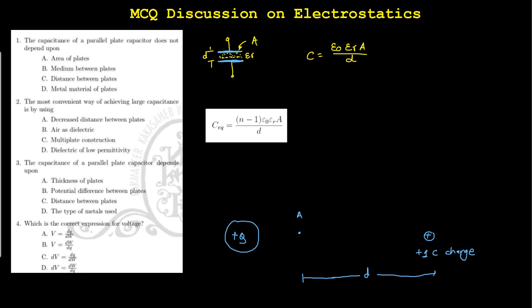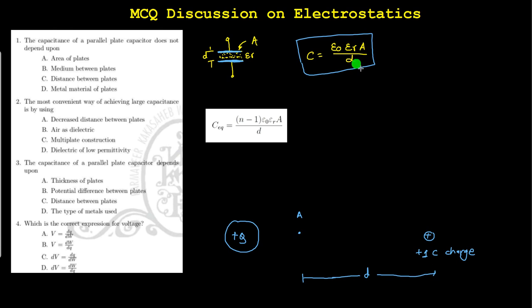In such cases you must remember the formula. What is the formula of the capacitance? The capacitance is equal to Epsilon₀ · Epsilon_R · A divided by d. For this you can refer to my previous YouTube video based on electrostatics.